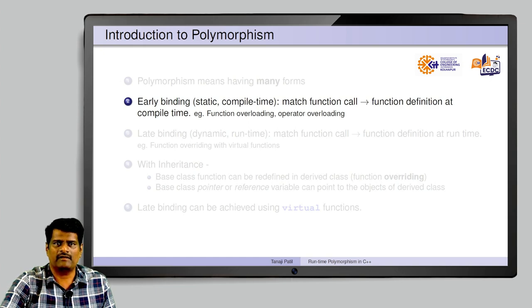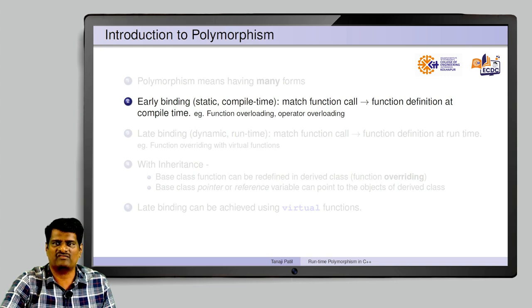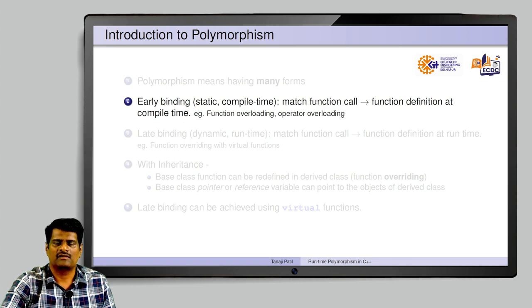Polymorphism can be implemented in two different ways. One way is called early binding. Binding is the process of matching a function call to its function definition. Early binding is also called static binding or compile-time polymorphism. We can achieve this by overloading functions or by overloading operators.